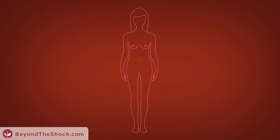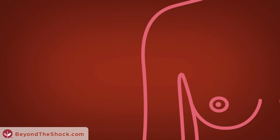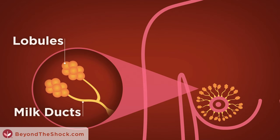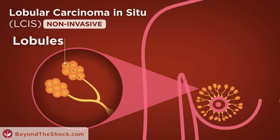Breast cancer usually begins either where the milk is being produced, the lobules, or in the milk ducts. Lobular carcinoma in situ, LCIS, is a pre-cancerous condition that forms and is contained in the lobules.